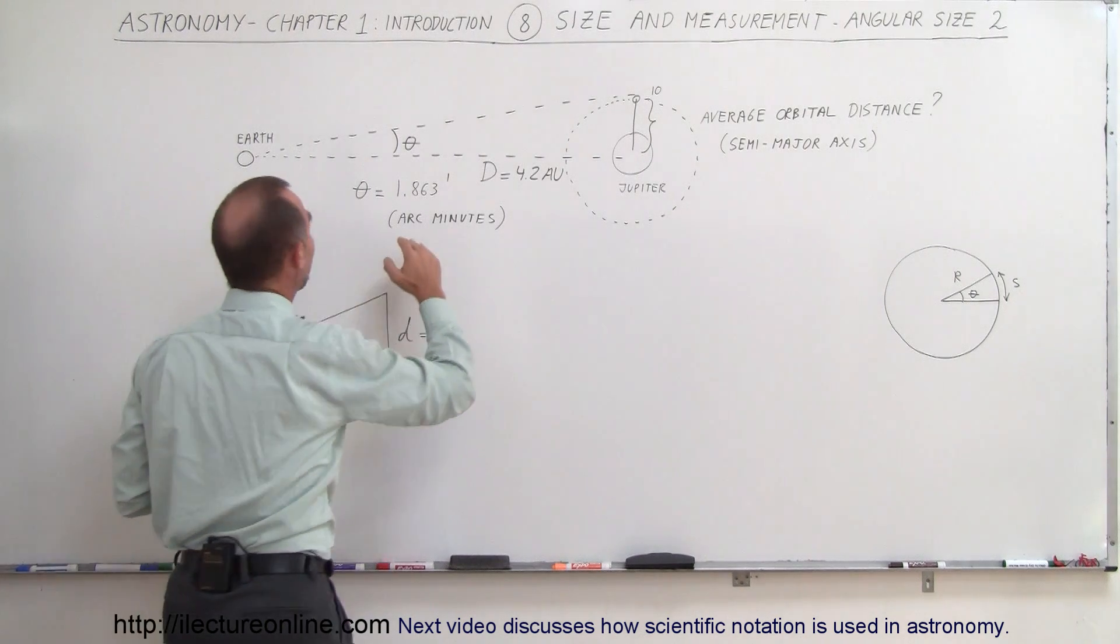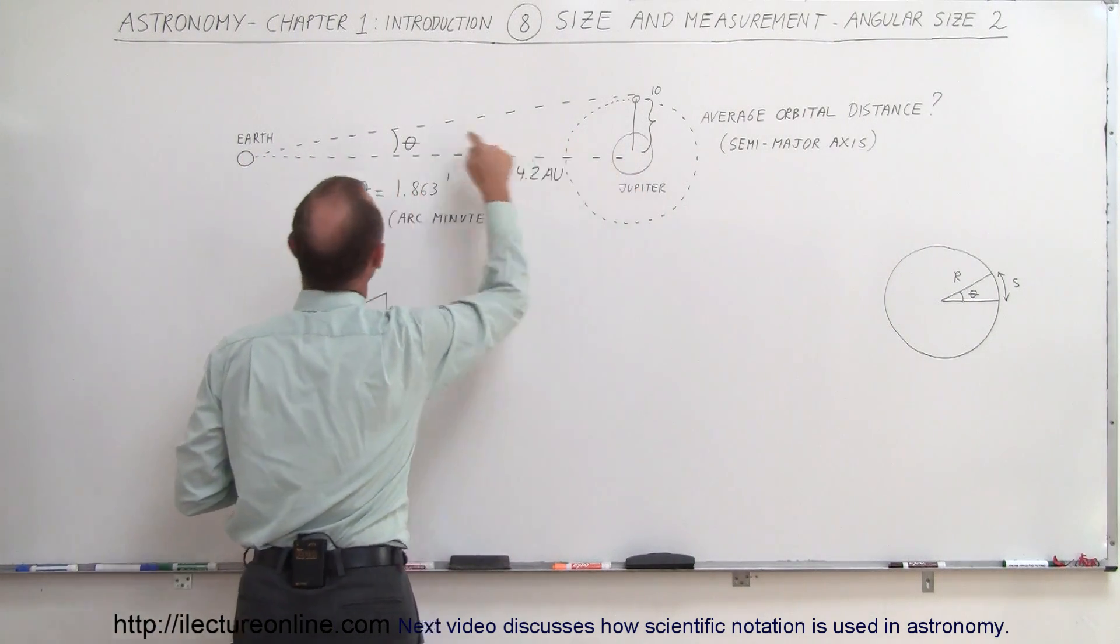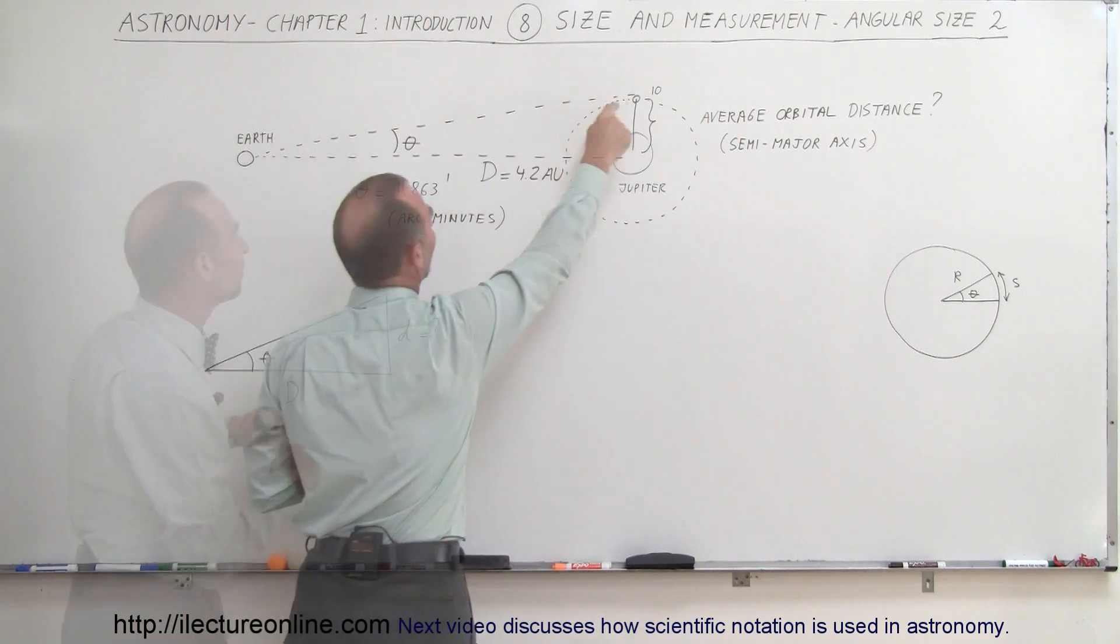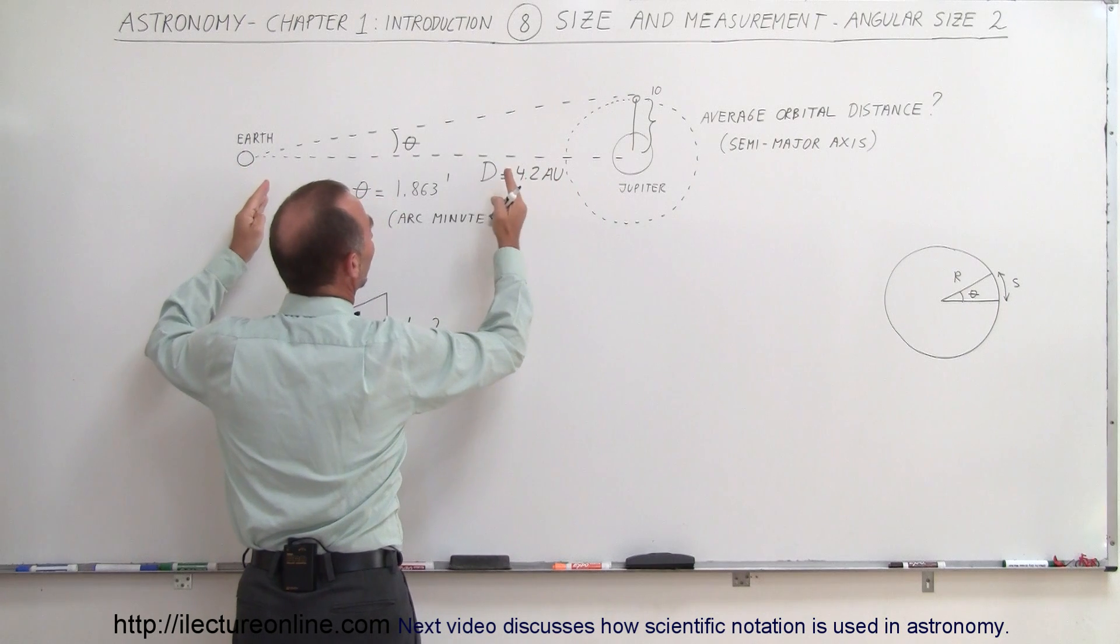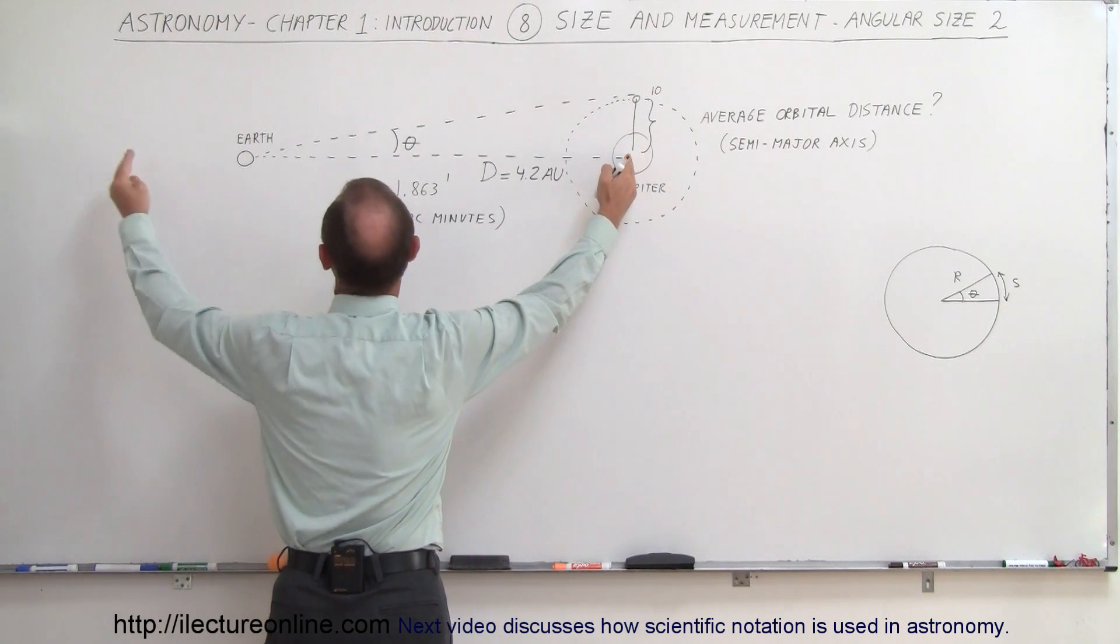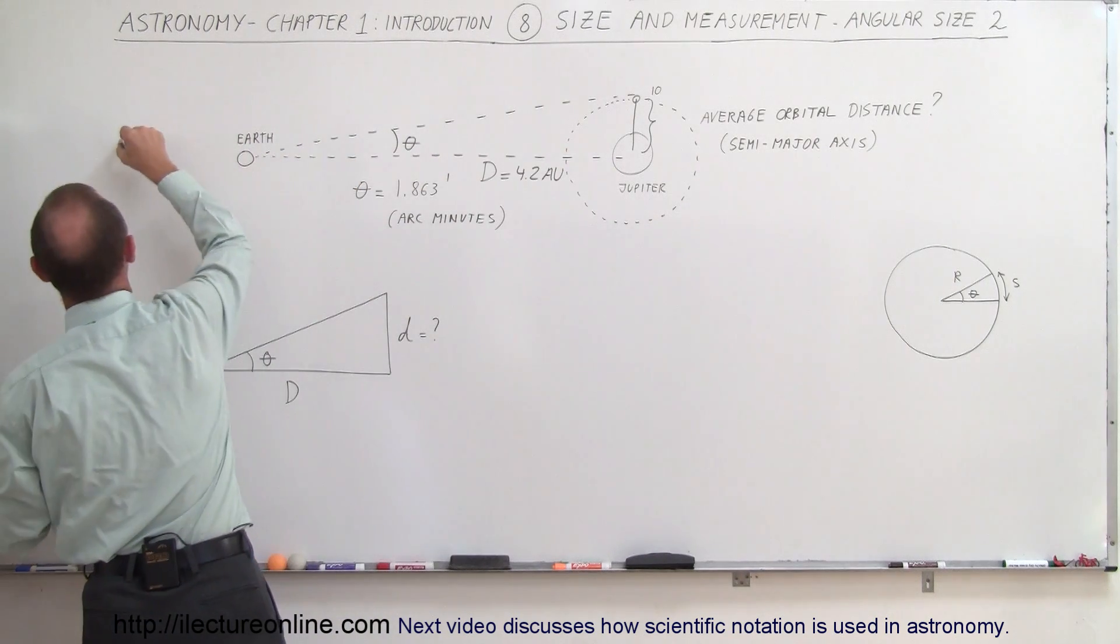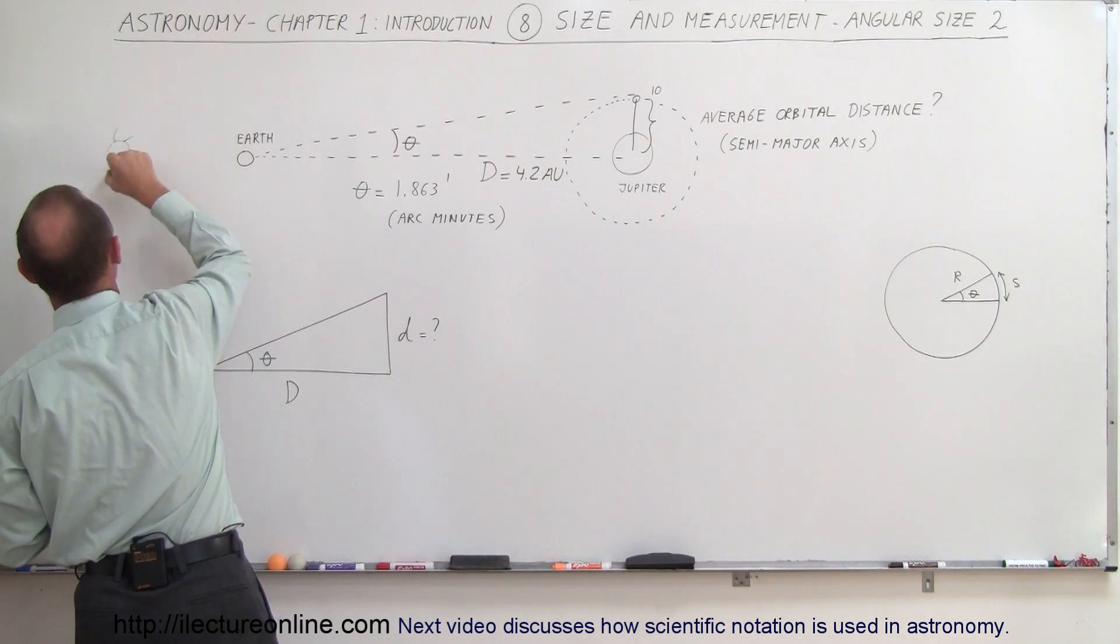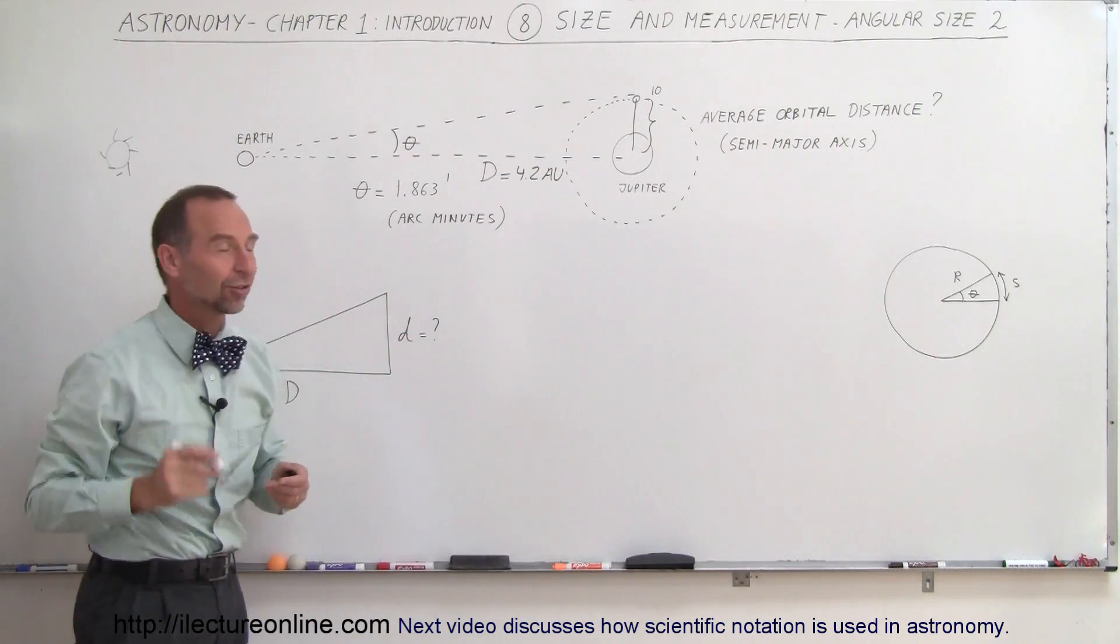And then let's say we go ahead and measure the angle. If we take a straight line from the Earth to Jupiter, and then we take another straight line from the Earth to Io. So the distance from the Earth to Jupiter is 4.2 astronomical units. Remember, from Jupiter to the Sun it's 5.2, but when Jupiter is in opposition in a straight line from the Sun, let's put the Sun over here, Earth and Jupiter, then the distance here would be 4.2 astronomical units.